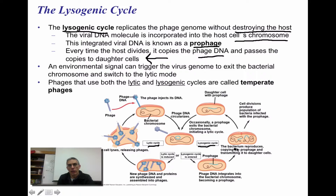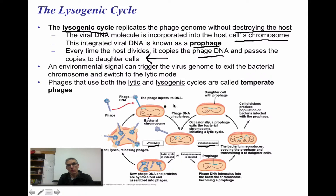Looking at the diagram, the phage attaches to the bacteria and injects its DNA. It's going to go one of two directions — either to the lysogenic cycle or to the lytic cycle. If it goes to the lytic cycle, that particular cell is going to be destroyed. If it transitions to the lysogenic cycle, that particular DNA is going to be incorporated within the bacterial DNA and passed on to the daughter cells. It's important to understand that viruses can reproduce in a couple of different ways — the outcome is either destroying the cell, or the cell maintaining itself and continuing to reproduce while still producing new viral particles.